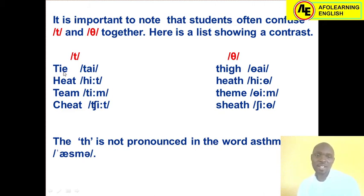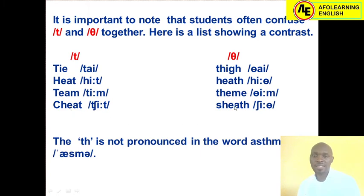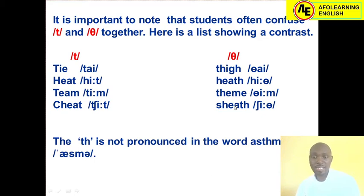We have: time and thigh, eat and eve, seem and theme, and cheat. For silent letters, the 'th' is not pronounced in the word asthma — so the letters 'th' are silent in that word. One more important thing about this sound is that it is often represented by the letters 'th'.